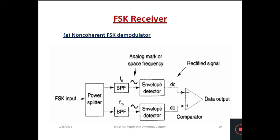The next part is the frequency shift keying receiver. In the case of the frequency shift keying receiver, there are basically two types: the coherent and the non-coherent type. How it will be able to generate the data given at the input side, which is generally the shift keying — it is encrypted data which is to be decrypted at the receiver side. That part we will discuss today.